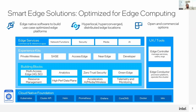SmartEdge Open provides a set of building blocks that enable you to optimize your solutions for the edge, such as high-performance data plane constructs, accelerators for AI and wireless networks, zero-trust security, multi-access, green edge constructs, telemetry and monitoring, which form the crucial components for enabling O-RAN RIC.